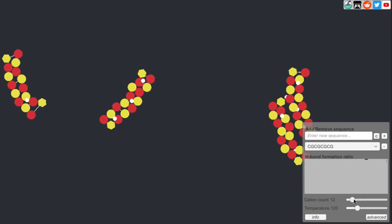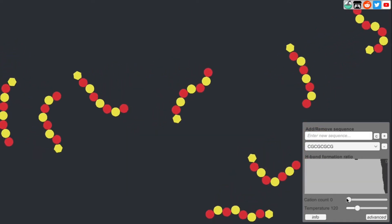Here I'll drop the cation count to zero and you'll see that quickly DNA separates.